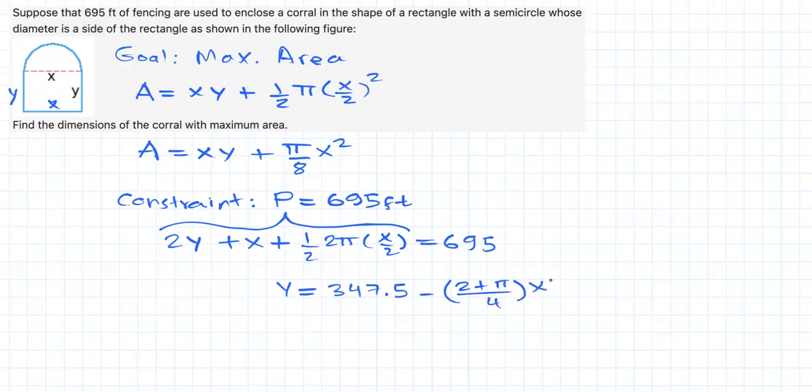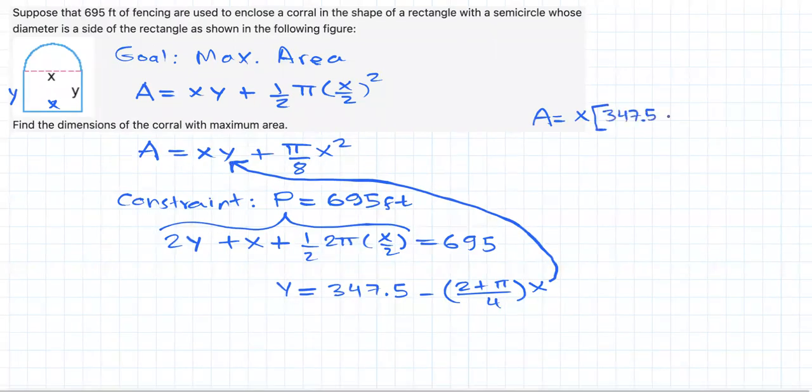Now that we have y in terms of x, I'm going to substitute this into here, my area function, which is often called the objective function, okay? So this means that the area should be equal to x times bracket 347.5 minus (2 plus pi over 4) times x close bracket plus pi over 8 x squared.